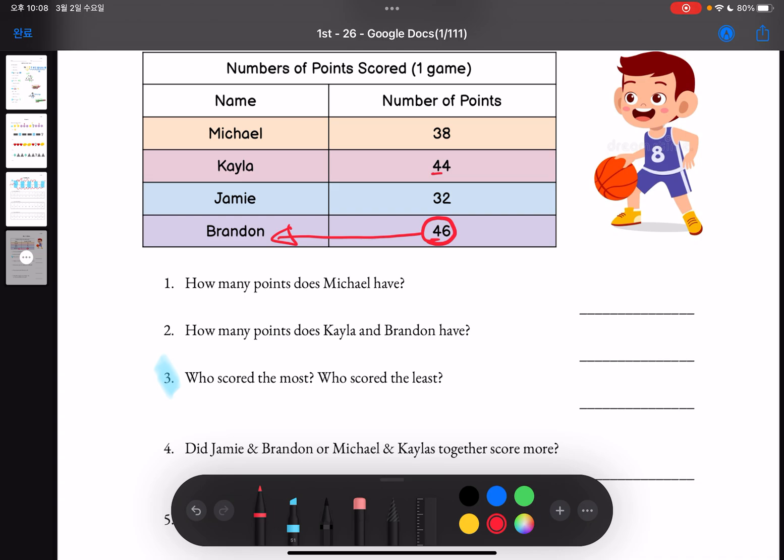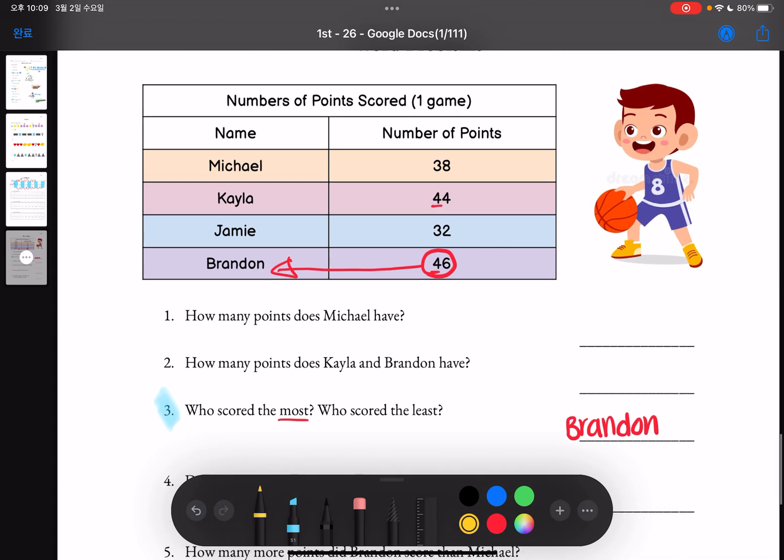So you'll put that, Brendan. And it asks you who scored the least. Now you have to look at who scored the least. Michael and Jamie, it's either those two because they for sure are less than Kayla and Brendan, and we have to compare the numbers 8 and 2. Eight is, and two is less than eight, so we know that Jamie scored the least.